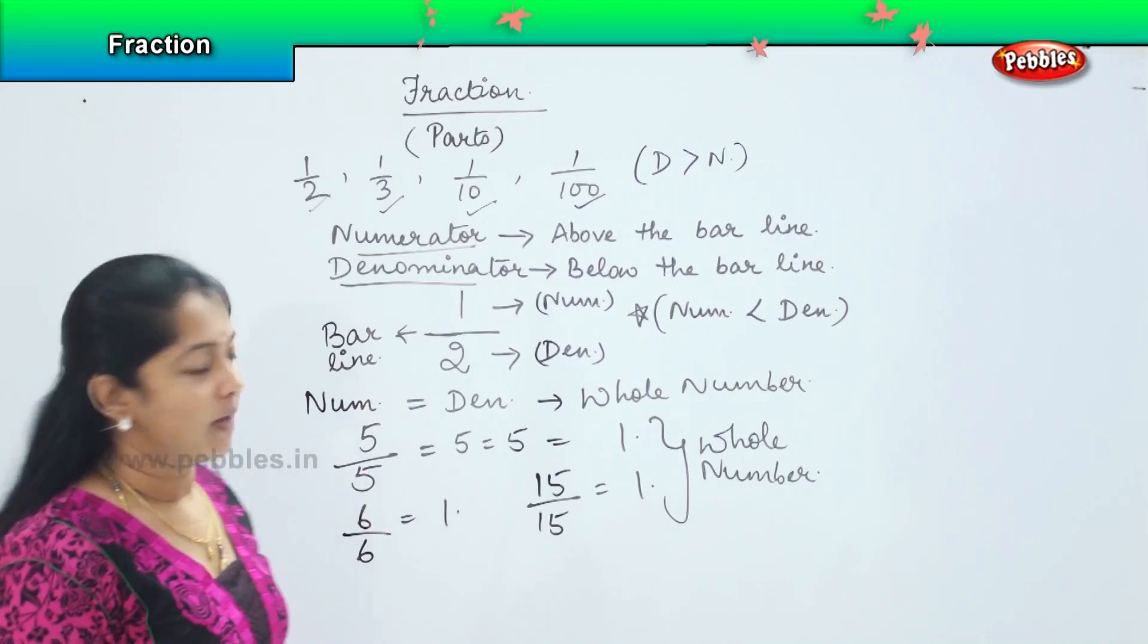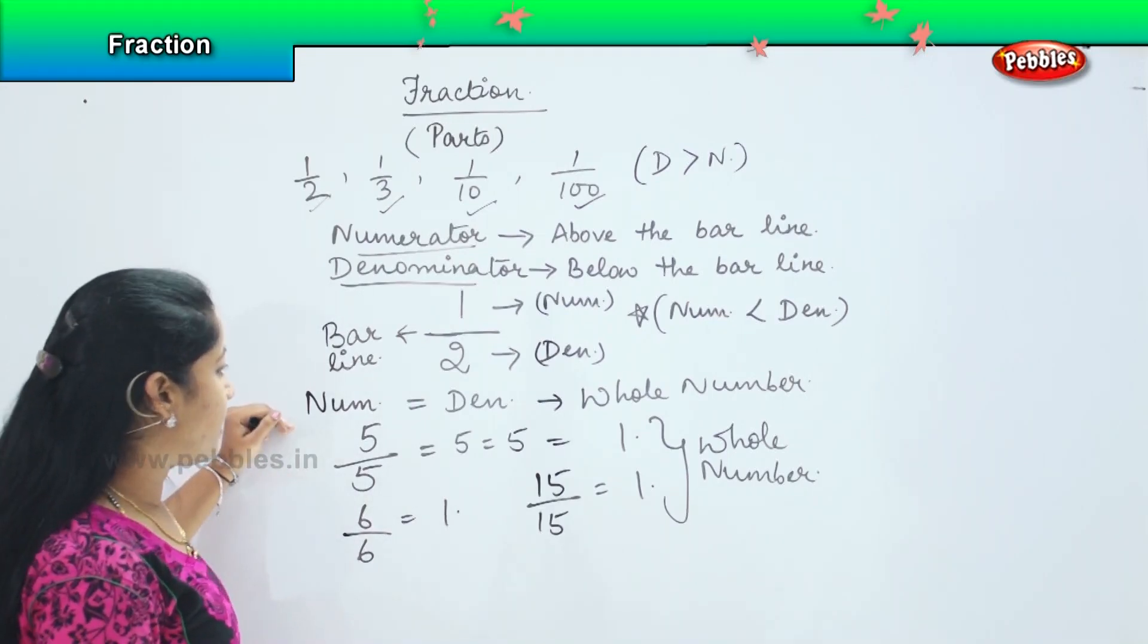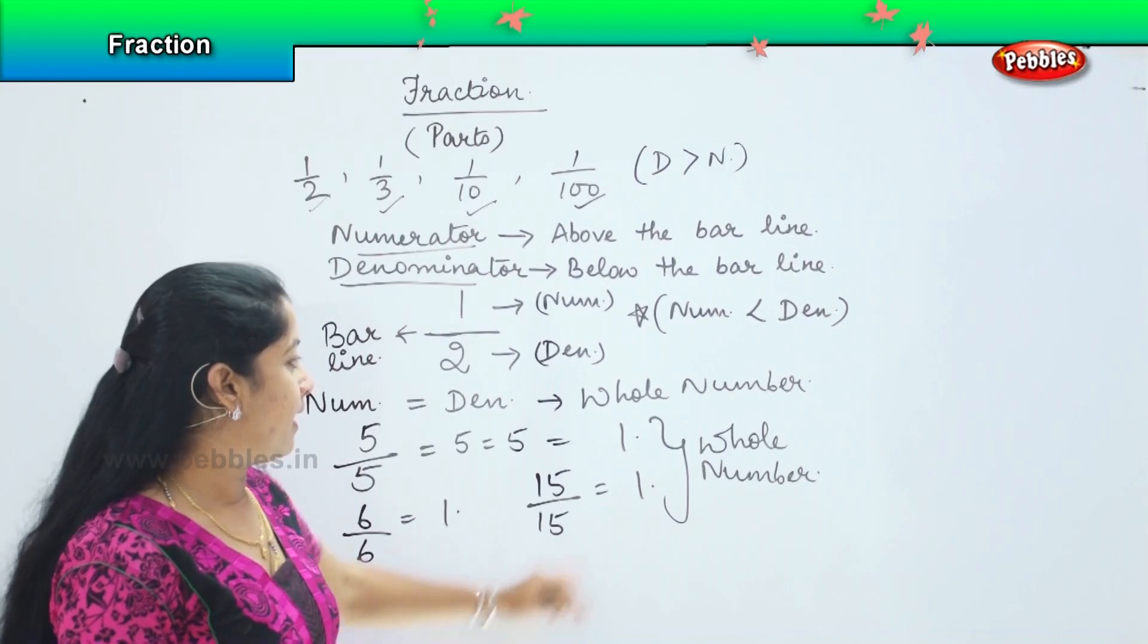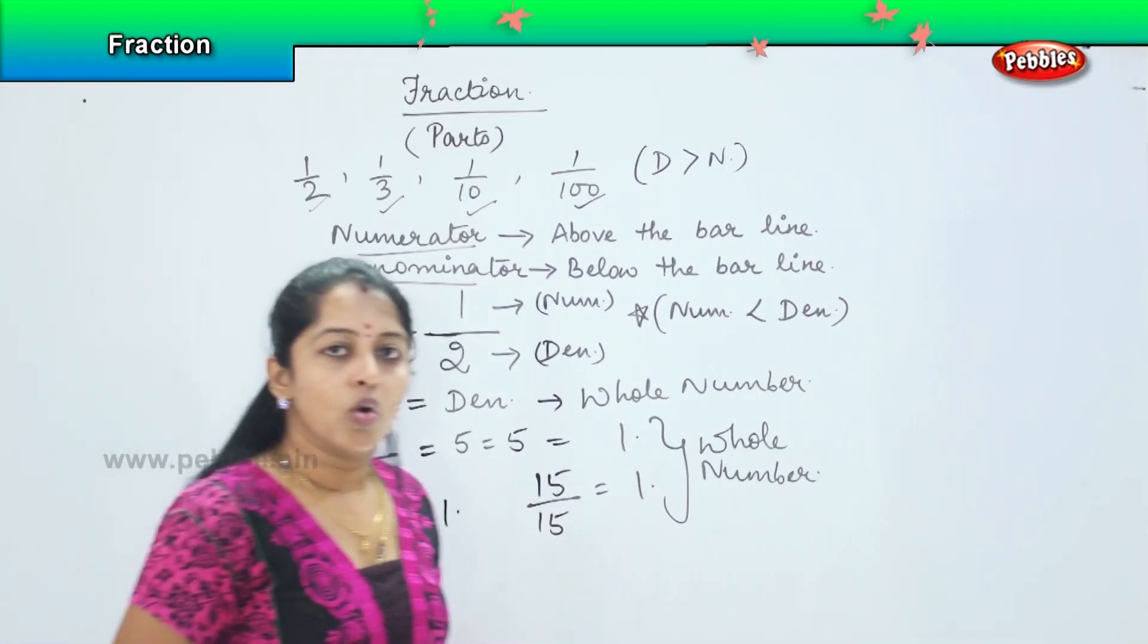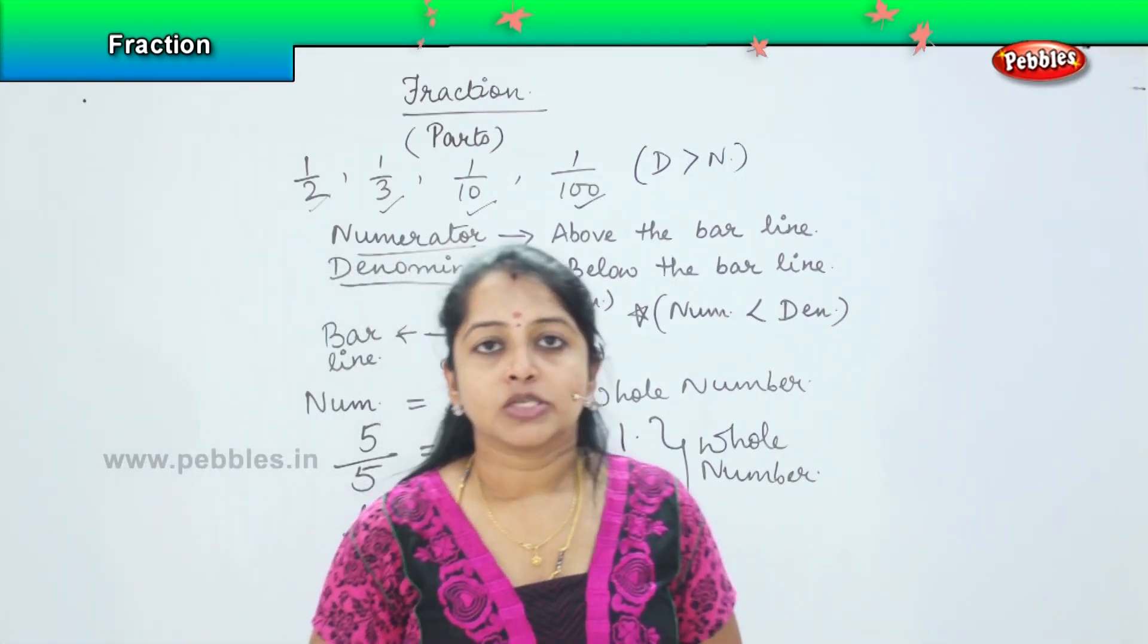And the third thing: if numerator and denominator are same, then it becomes the whole number.